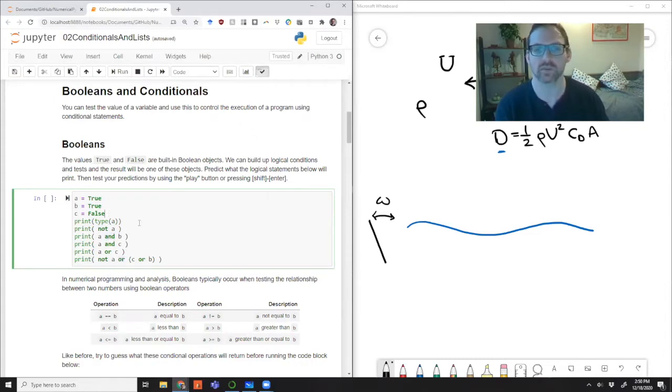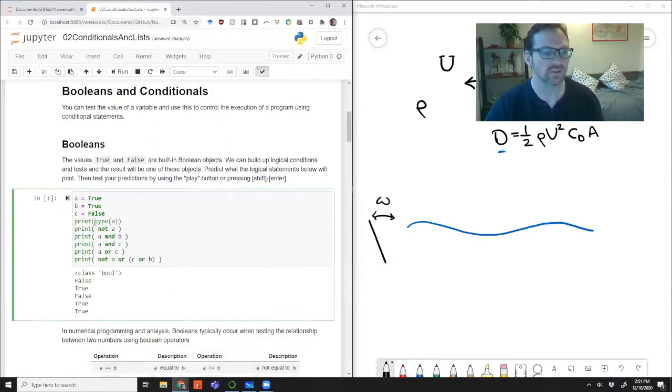So as your first little assignment, why don't you try to look through this list? What do you think the result is going to be from these? So first is that the type of this a variable is a bool. So that's the type, just like we had ints and strings and floats, now we also have bool objects. Then of course when we say not something, we mean we're flipping from true to false or false to true. So since A was true, now not A is false. A and B, that means that both things have to be true to return true. And that is the case for A and B, but it's not the case for A and C. A or C, or means that if either is true, you return true.